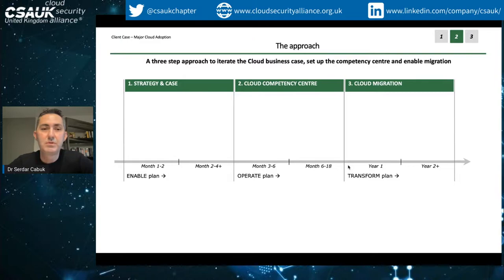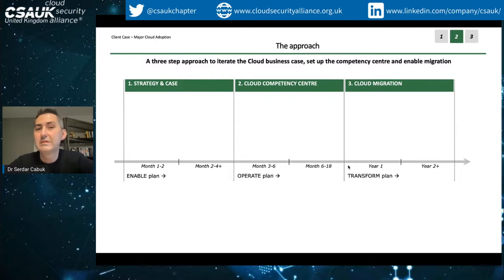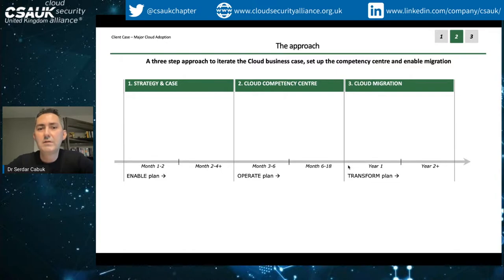Typically we want to see three things in a cloud adoption program. First, coming up with a good business case - why you're doing this, what is the return on investment, and what is the value proposition of going to the cloud. That will drive which parts of your business need to go to the cloud. Second, there is a big people aspect, which we call the Cloud Competency Center - what functions remain on-premise, what functions get outsourced to the cloud service provider, and being very clear about the target operating model.